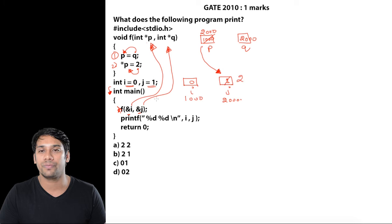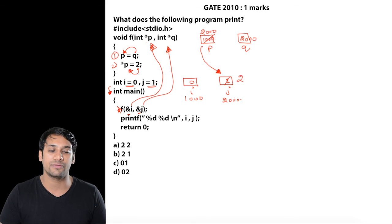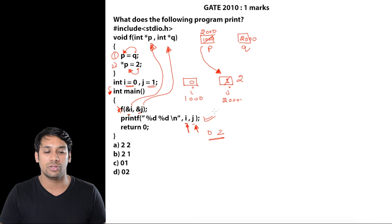After this, the void function is finished, so we come back to main and execute the printf statement. We are printing the values of i and j. The value of i is 0 and j is 2, therefore we print 0 and 2. So option d is correct.